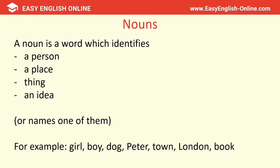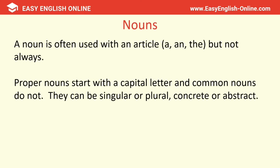Let's start with nouns. A noun is a word which identifies a person, a place, a thing, an idea, or names one of them. For example, a girl, a boy, a dog, Peter, town, London, book. A noun is often used with an article — a, an, or the — but not always. Proper nouns start with a capital letter, like Peter or London, and common nouns do not. They can be singular or plural, concrete or abstract. Please see my next video in the series for more details on nouns.